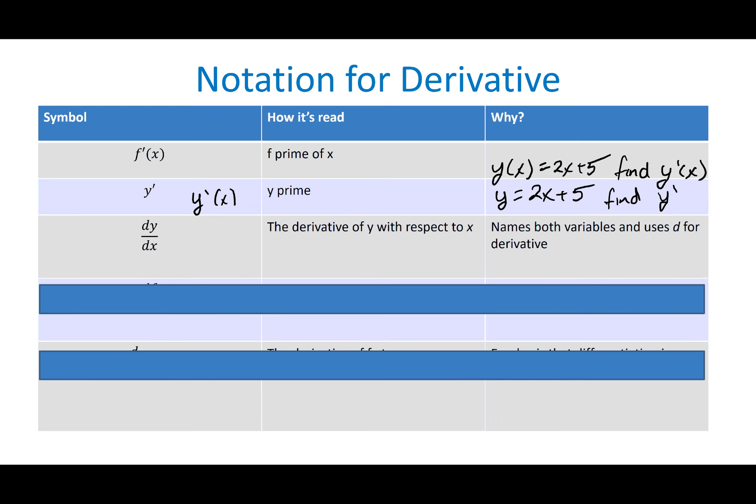Another way you will see it — and we'll use this a lot — is DY DX. So DY over DX, it's not division. It's basically just a symbol to represent the derivative. This is the derivative of Y with respect to X, and it names both variables, using D to represent derivative. So DY DX — you'll hear me say find DY DX — all that means is you're simply finding the derivative of the function, that slope function representing the tangent line.